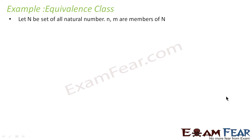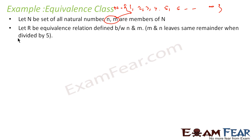Having understood the real-life example, let's take a mathematical example of equivalence class. Let N be the set of all natural numbers: 1, 2, 3, 4, 5, 6, and so on. N and M are members of this set. We define an equivalence relation between N and M such that N and M leave the same remainder when divided by 5. This is indeed an equivalence relation.